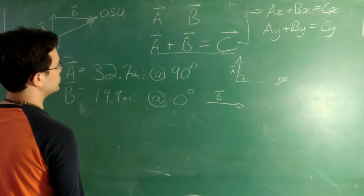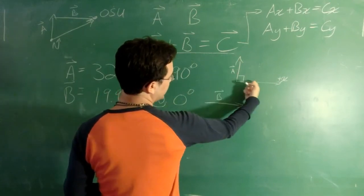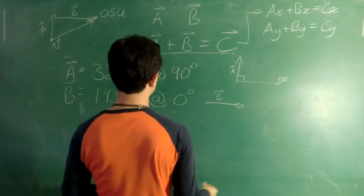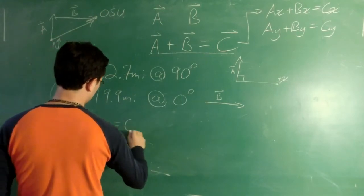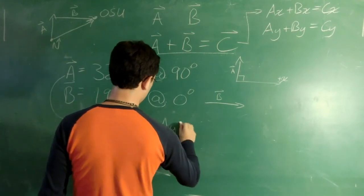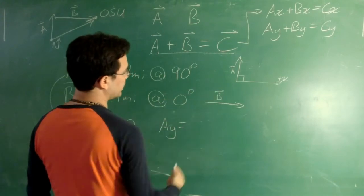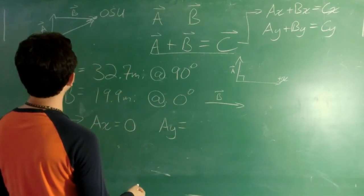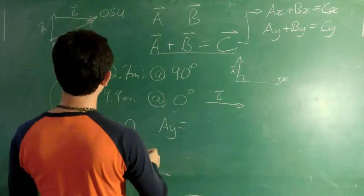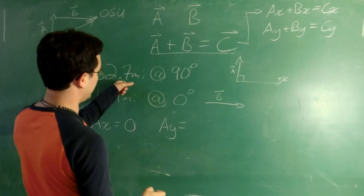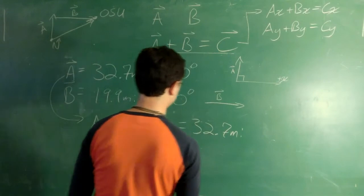Well, in this case, this one's pretty simple, because A, our vector A, that points straight up. None of it is in the x direction. So its x component, A sub x equals 0. And A sub y, well, because none of it is in the x direction, that means all of it is in the y direction. So, our A sub y is actually equal to the total length of our vector, because none of it is in the x direction.